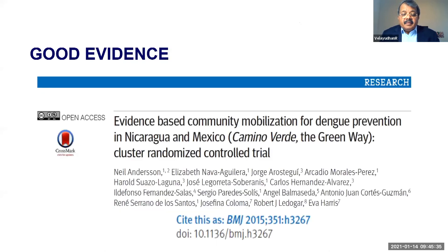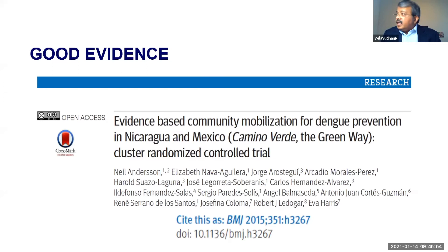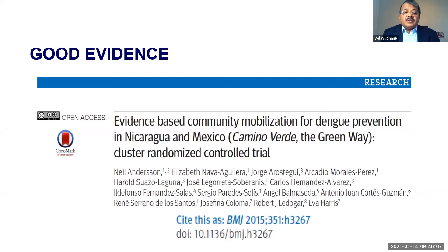One of the strongest pieces of evidence we have is that only in 2015 was the first randomized controlled trial for dengue ever published — in the British Medical Journal. This study in Nicaragua and Mexico clearly shows the evidence for community involvement and mobilization for dengue prevention and control, using a non-insecticide-based approach with community participation and source reduction — a very successful study with clear, good evidence.